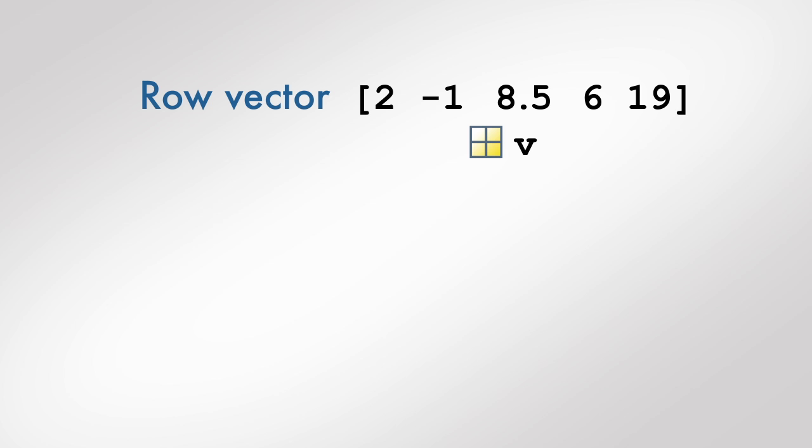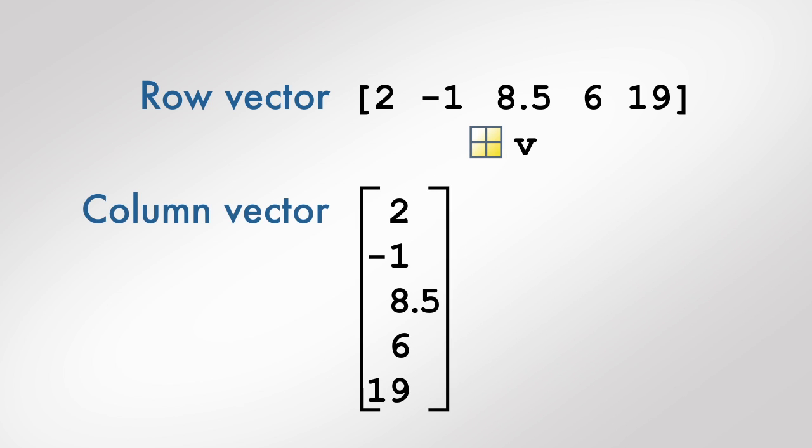Consider a row vector v. Because many matrix and vector operations require specific dimensions, we may need to convert a row vector to a column vector, or vice versa.